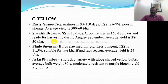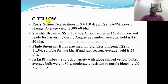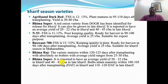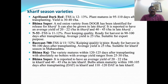Yellow color varieties include Early Reno, with crop maturity of 95 to 110 days, TSS very low at 6 to 7 percent, poor storage, and average yield of 50 to 60 tons per hectare. Spanish Brown has crop maturity of 160 to 180 days, ready for harvesting during August-September, and average yield of 28 to 30 tons per hectare. Arka Pitambar, introduced by IIHR Bangalore, is a Kharif variety with globe-shaped yellow bulbs, average bulb weight 80 grams, moderately resistant to purple blotch, and yield of 35 to 38 tons per hectare.